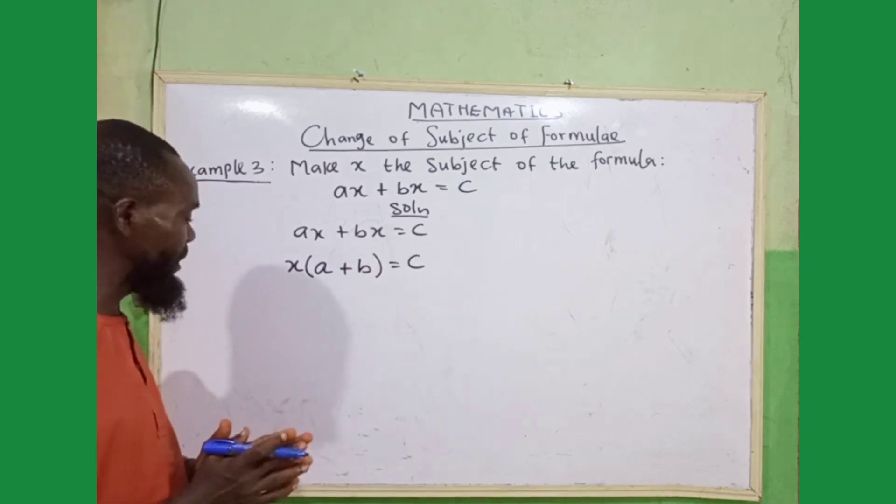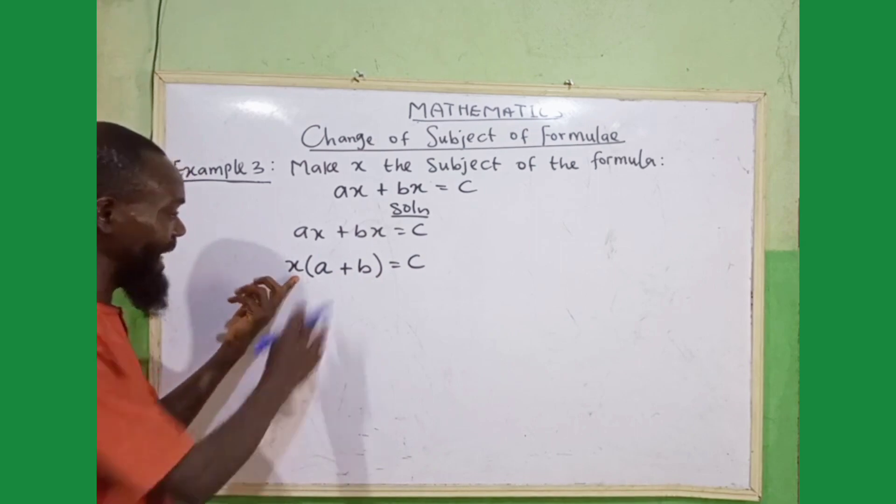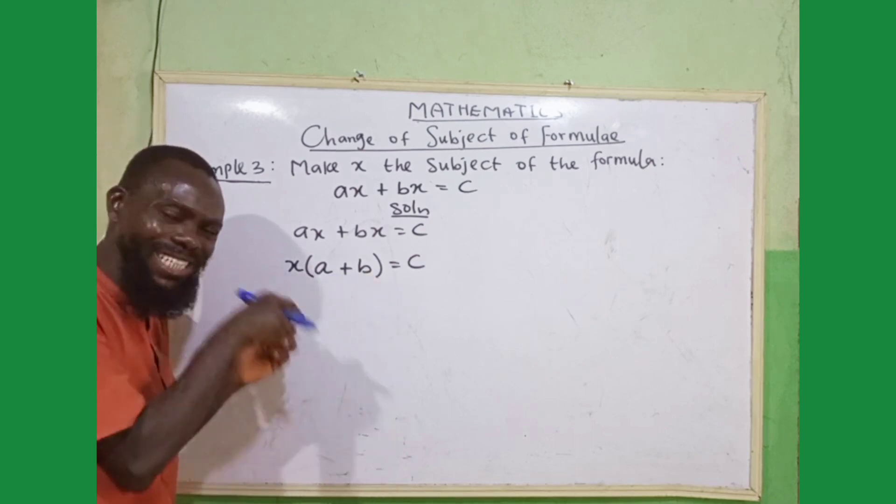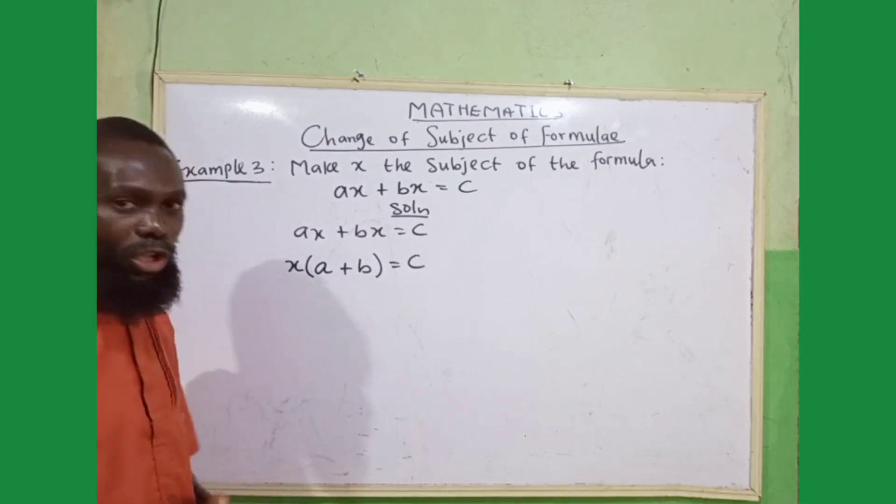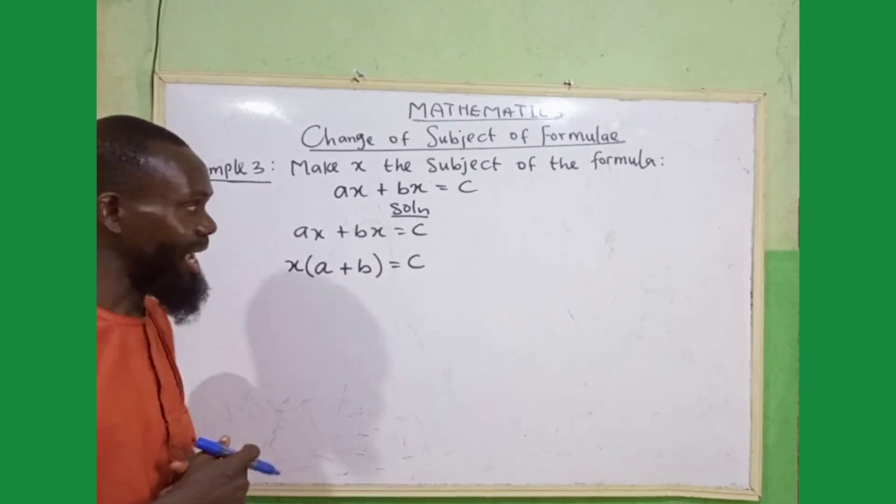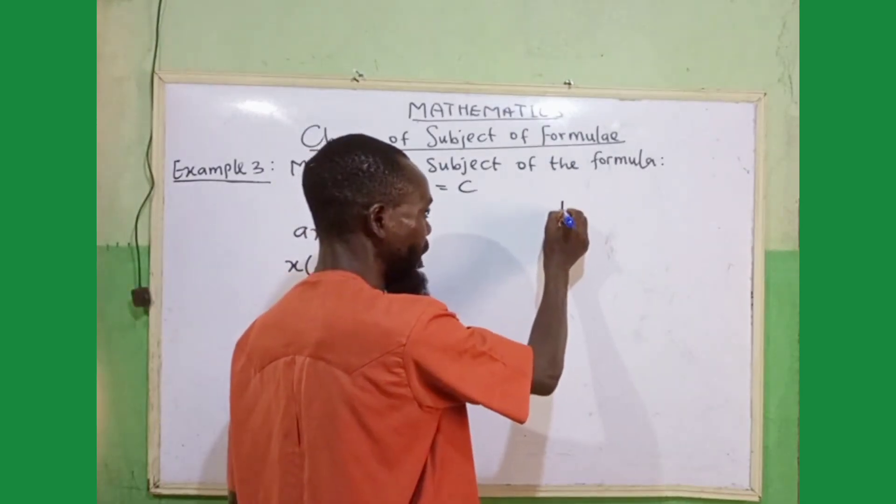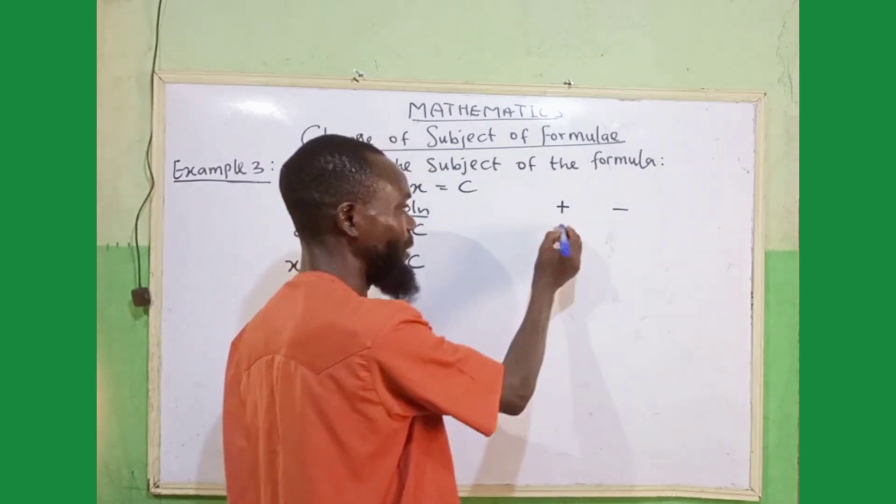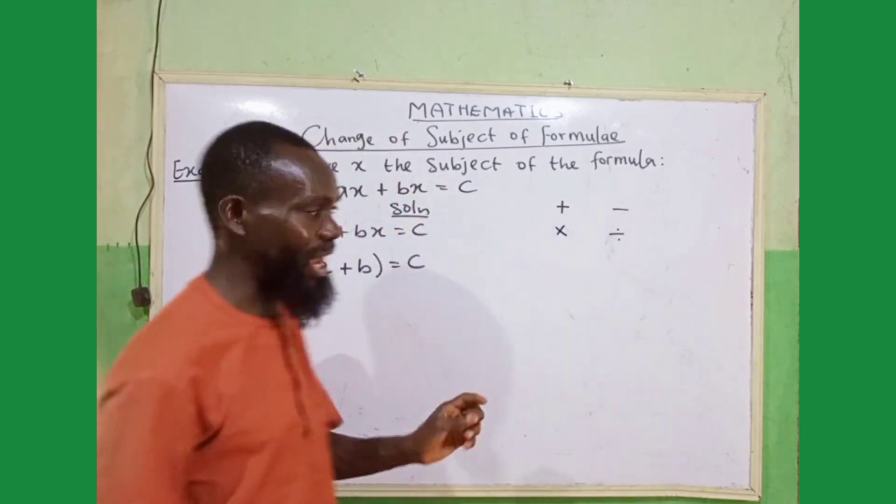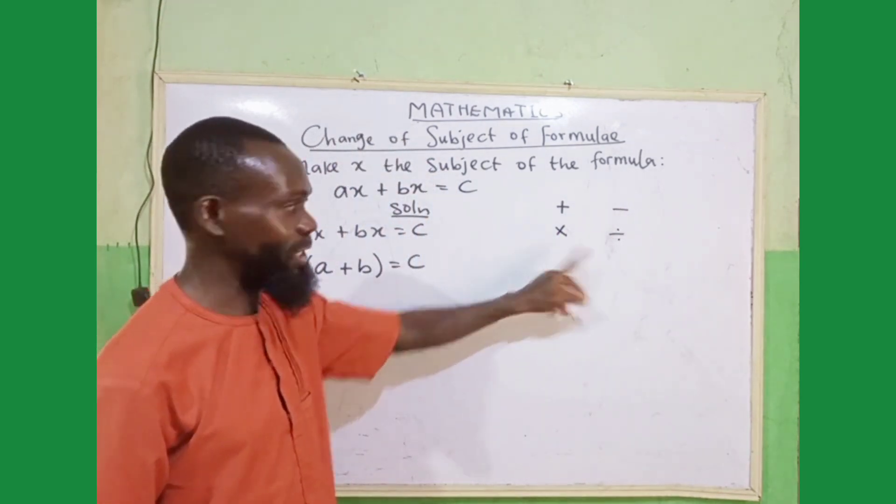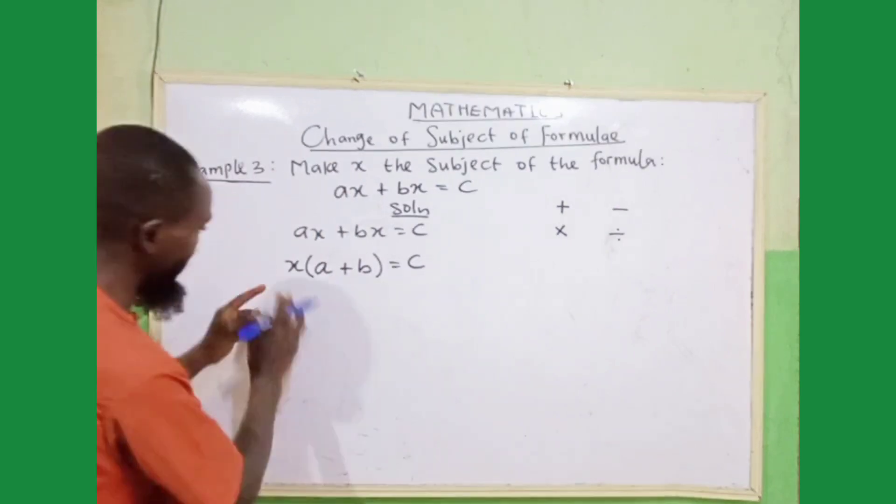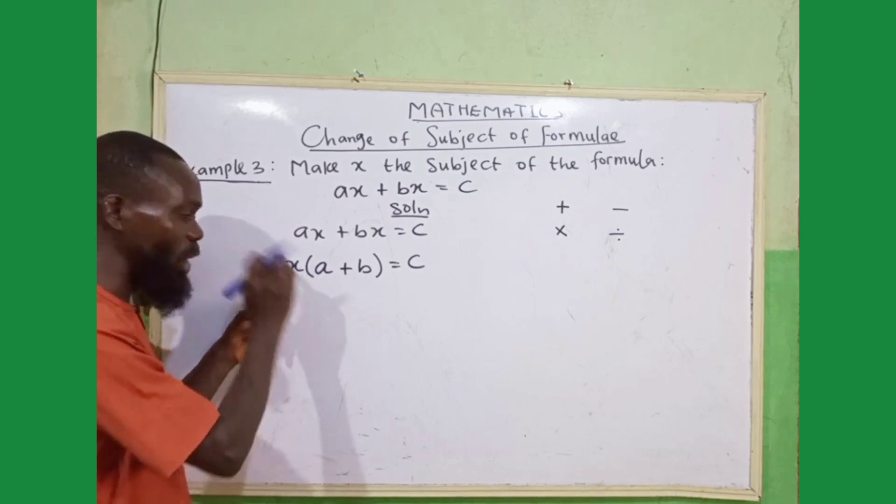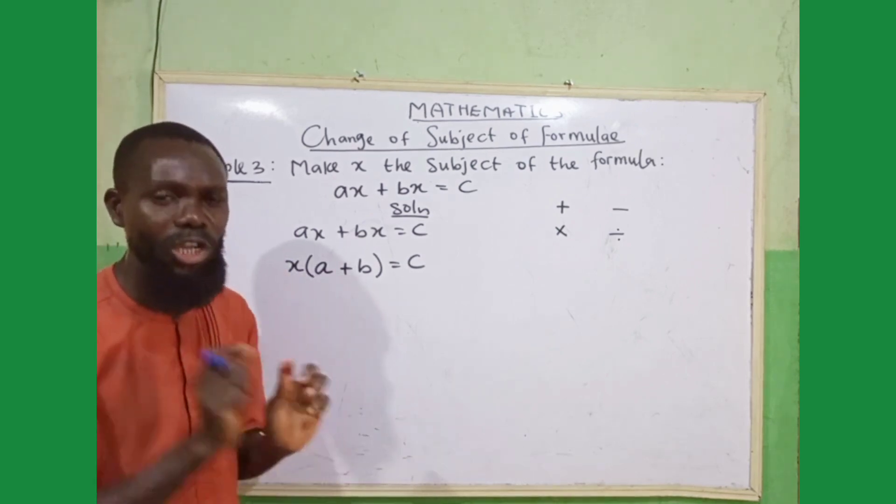The next thing to do is, you know that, this x and (a + b), they are being separated by brackets. Brackets, in this case, means multiplication. If we can recall in our previous classes, I said, the opposite of positive is equal to minus. The opposite of multiplication is division. So, if we have multiplication, the opposite is division. Since what is joining x and these values together is multiplication. To now find the value of x, we have to use the opposite of multiplication, which is division.